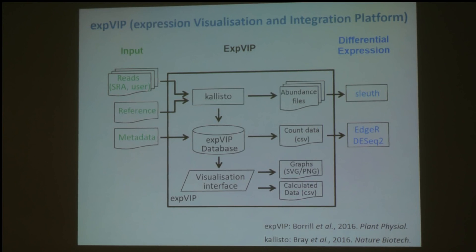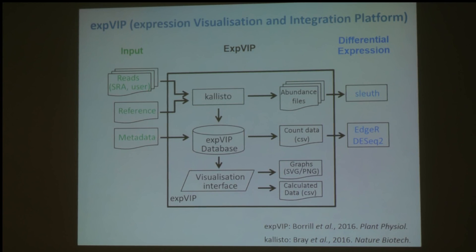You take RNA-seq reads as input. You also need to have a reference transcriptome, and you need metadata — by this I mean information about what the RNA-seq sample is: what tissue does it come from, is it from the leaf or the root, how old was the plant, or what variety of wheat was it. You can add all three types of information together. The platform XVIP — an Expression Visualisation and Integration Platform — takes this information, aligns the reads to the transcriptome, and makes a database which produces a visualisation interface that you can easily filter, sort, and explore.